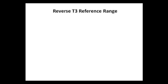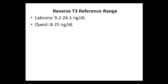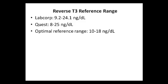Let's talk about the reference range of reverse T3. According to LabCorp, their reference range is 9.2 to 24.1 nanograms per deciliter. Quest Diagnostics' range for reverse T3 is 8 to 25 nanograms per deciliter. And the optimal reference range would be 10 to 18 nanograms per deciliter.